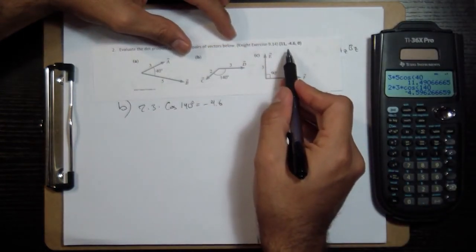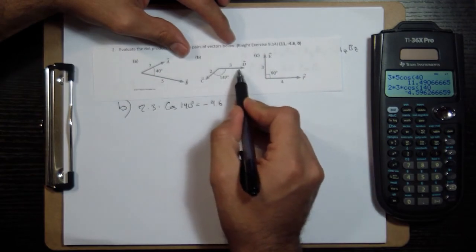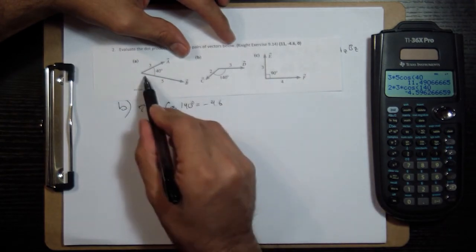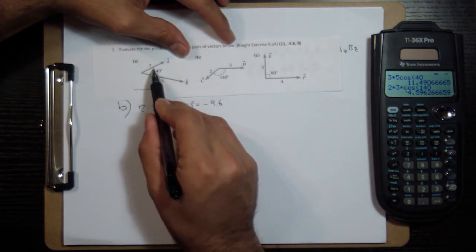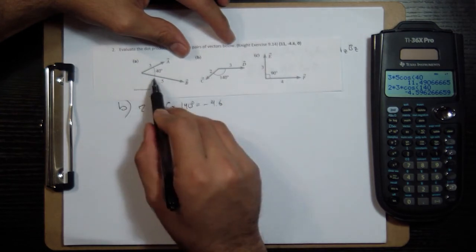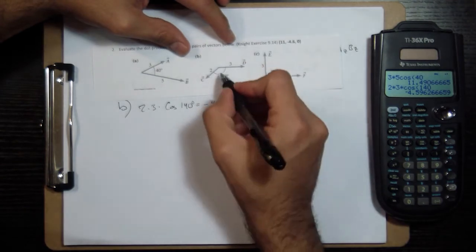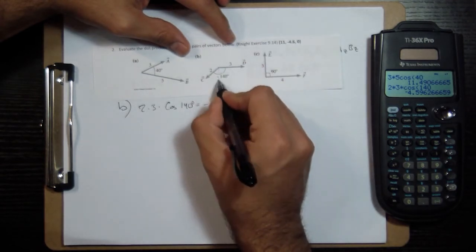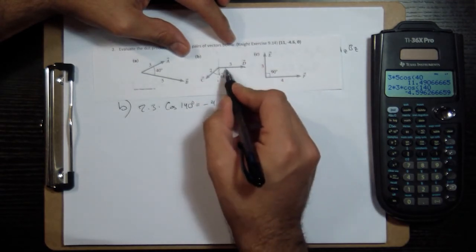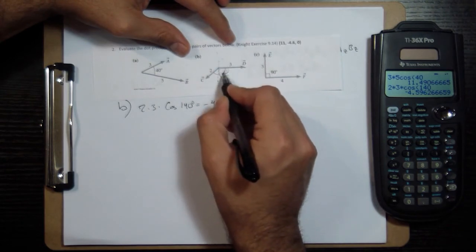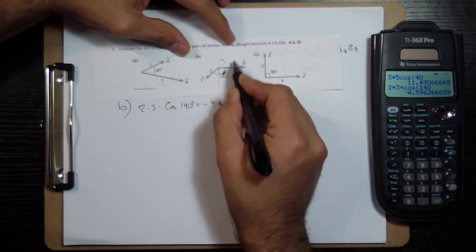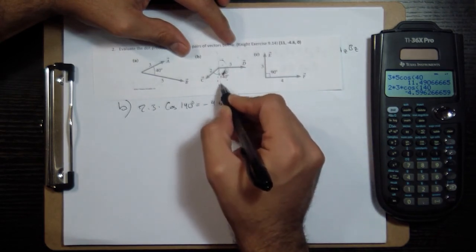Now the reason it's coming out as a negative, and that's important, is because the vectors are in opposite directions. Here, the angle is less than 90 degrees. Here, it's 90 degrees. And here, it's more than 90 degrees. So if you look at this angle, anything on this side with another vector on this side is gonna give you a positive dot product. But if it's over here, it's gonna give you a negative dot product.